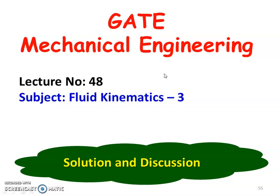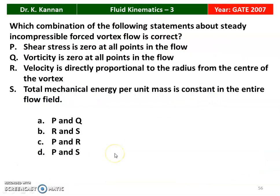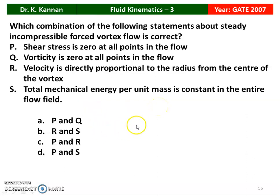We are going to discuss the answers for a few questions in the subject fluid kinematics. This is part 3 in fluid kinematics. The first question from the 2007 question paper: which combination of the following statements about steady incompressible forced vortex flow is correct? There are four statements: P — shear stress is zero at all points; Q — vorticity is zero at all points; R — velocity is directly proportional to the radius from the center of the vortex; S — total mechanical energy per unit mass is constant in the entire flow field. The answer is statements R and S are correct; P and Q are not correct.